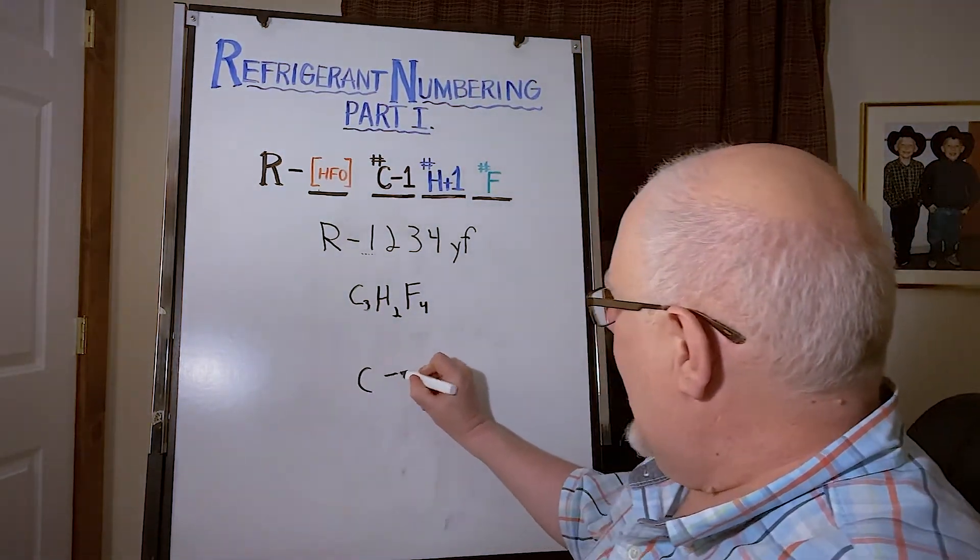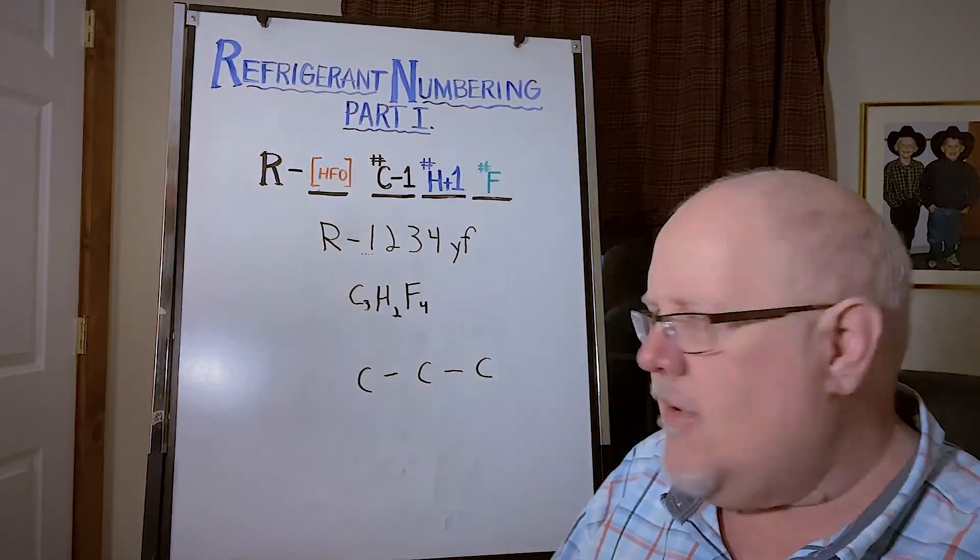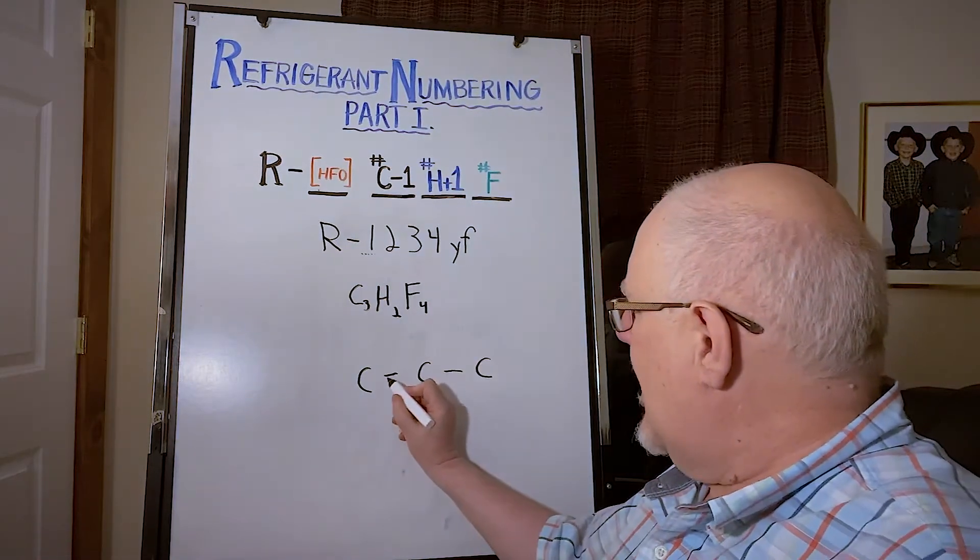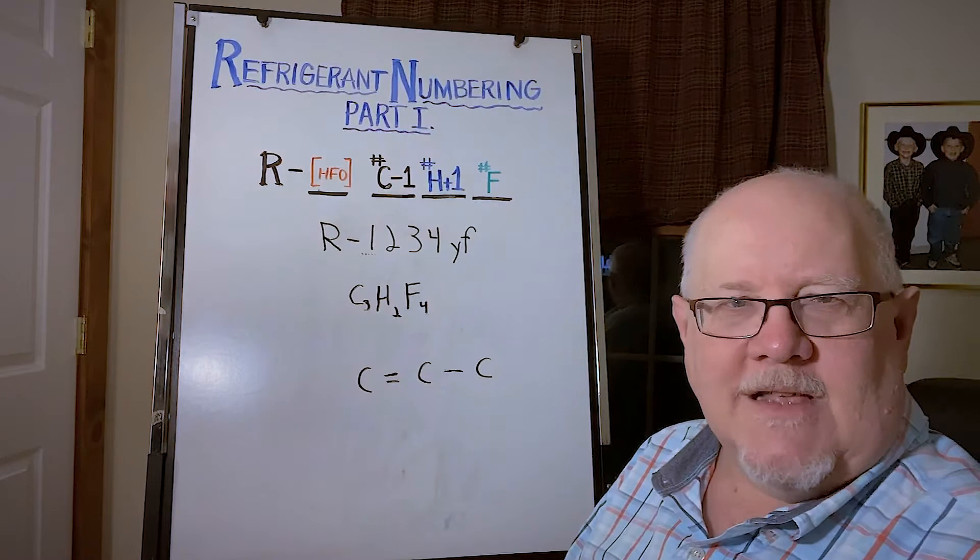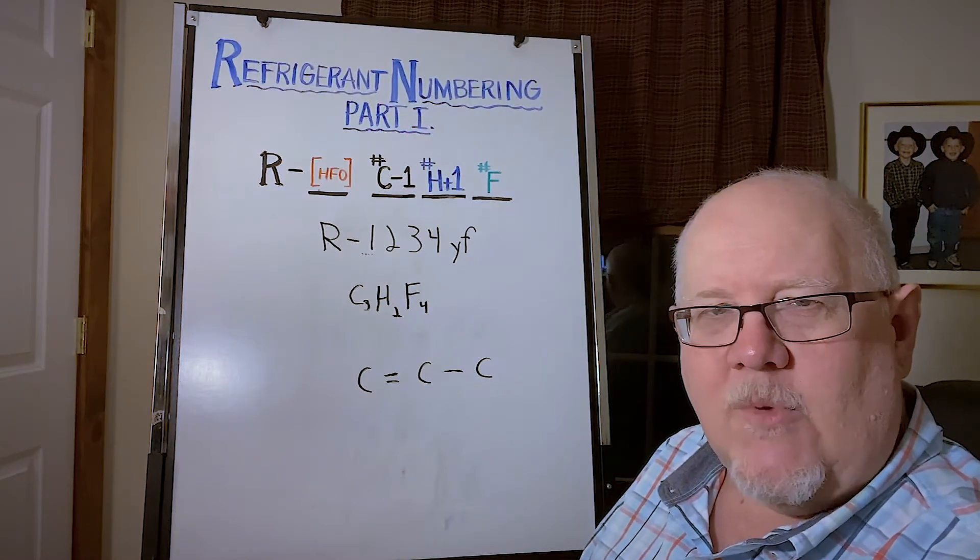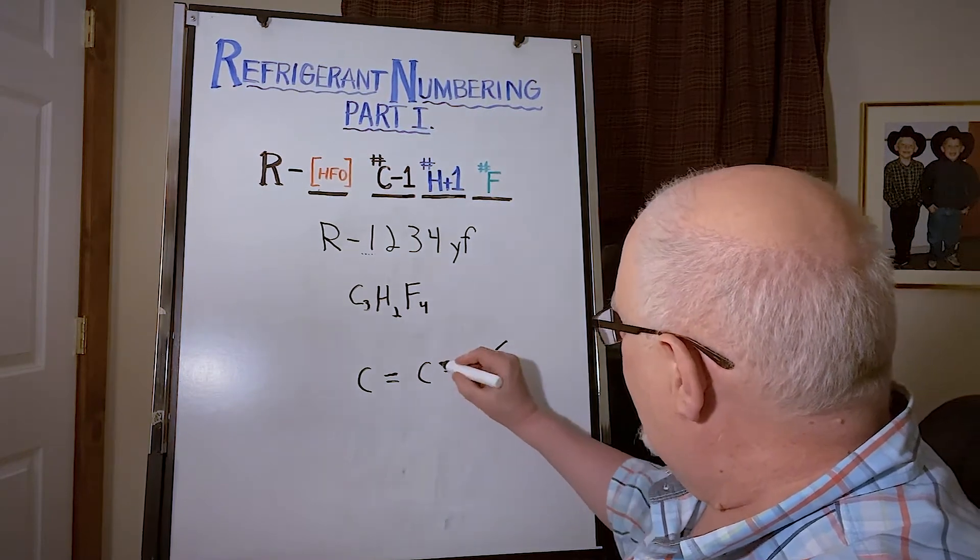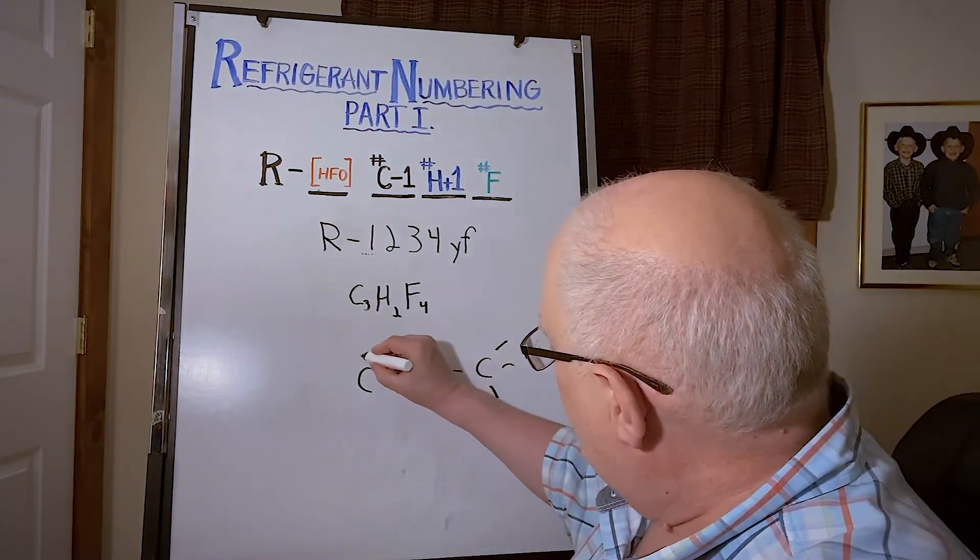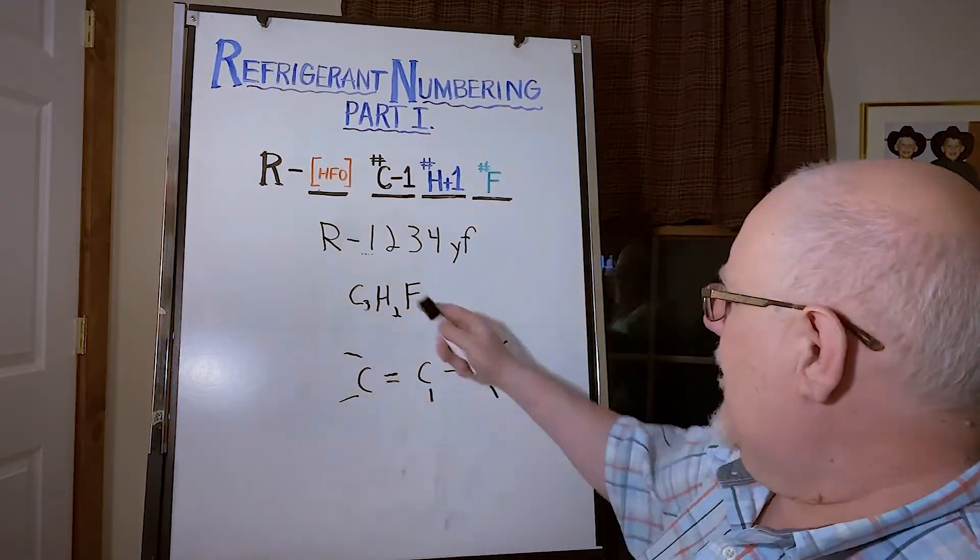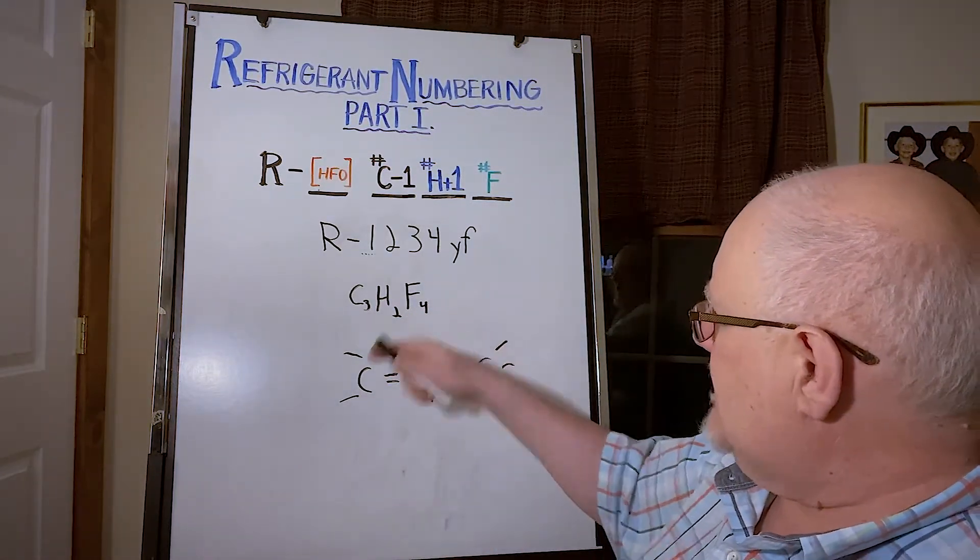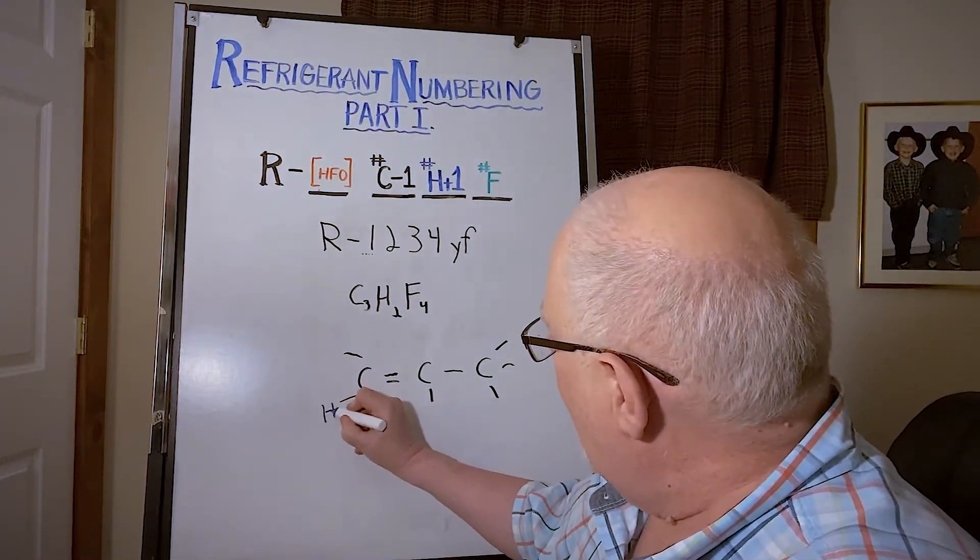The way we draw that out, again it's got three carbons connected to each other, that's where the propane name comes from. And we know it's an olefin so it has that important carbon-carbon double bond in there. That's what gives it the short atmospheric lifetime, the very low GWP. And then connected here we have the usual suspects for a total of four bonds to each carbon, and what we have to fill in on those bonds, again we have four fluorines and two hydrogens.